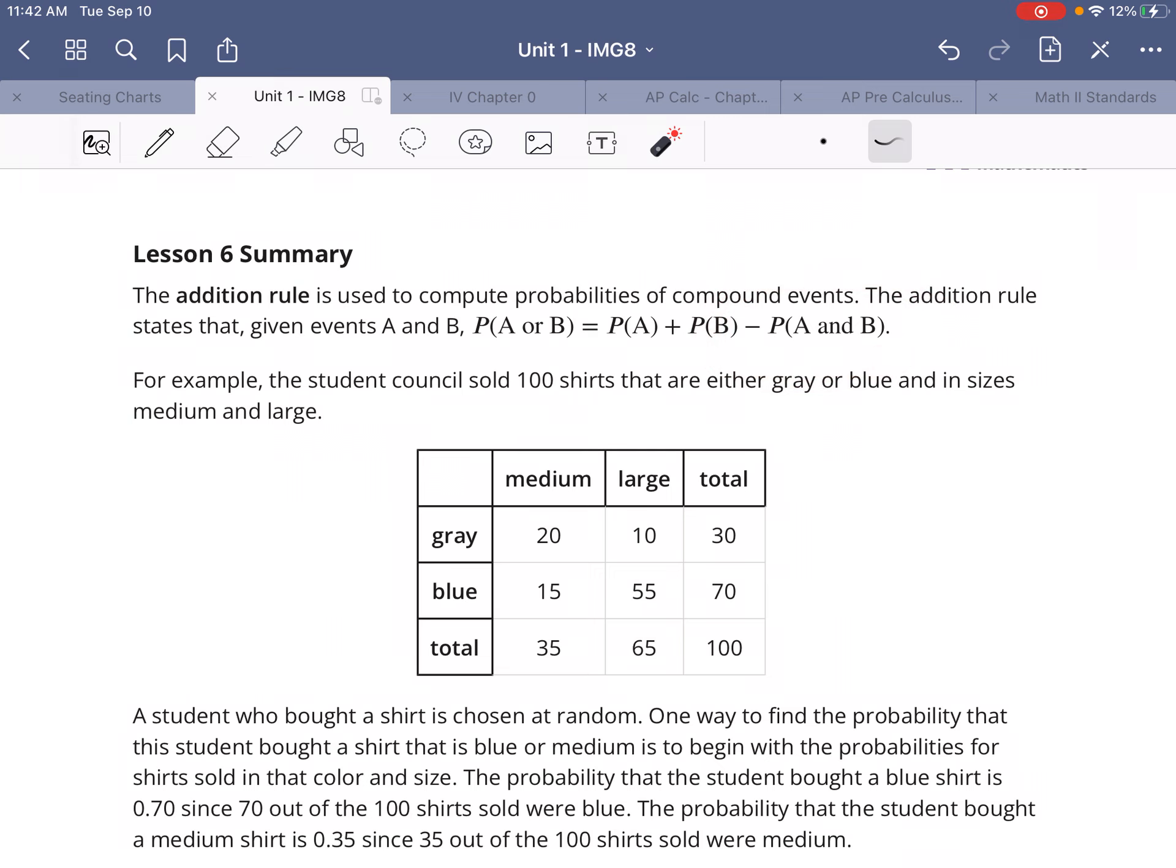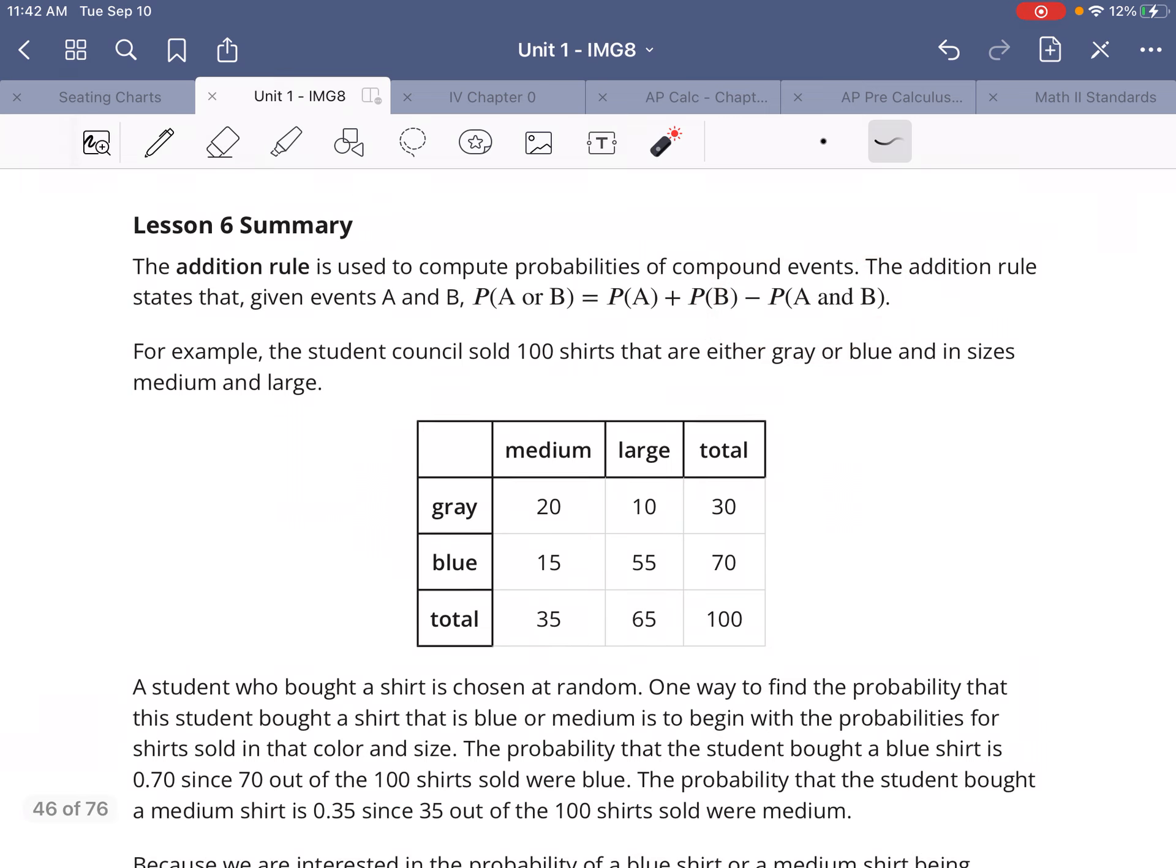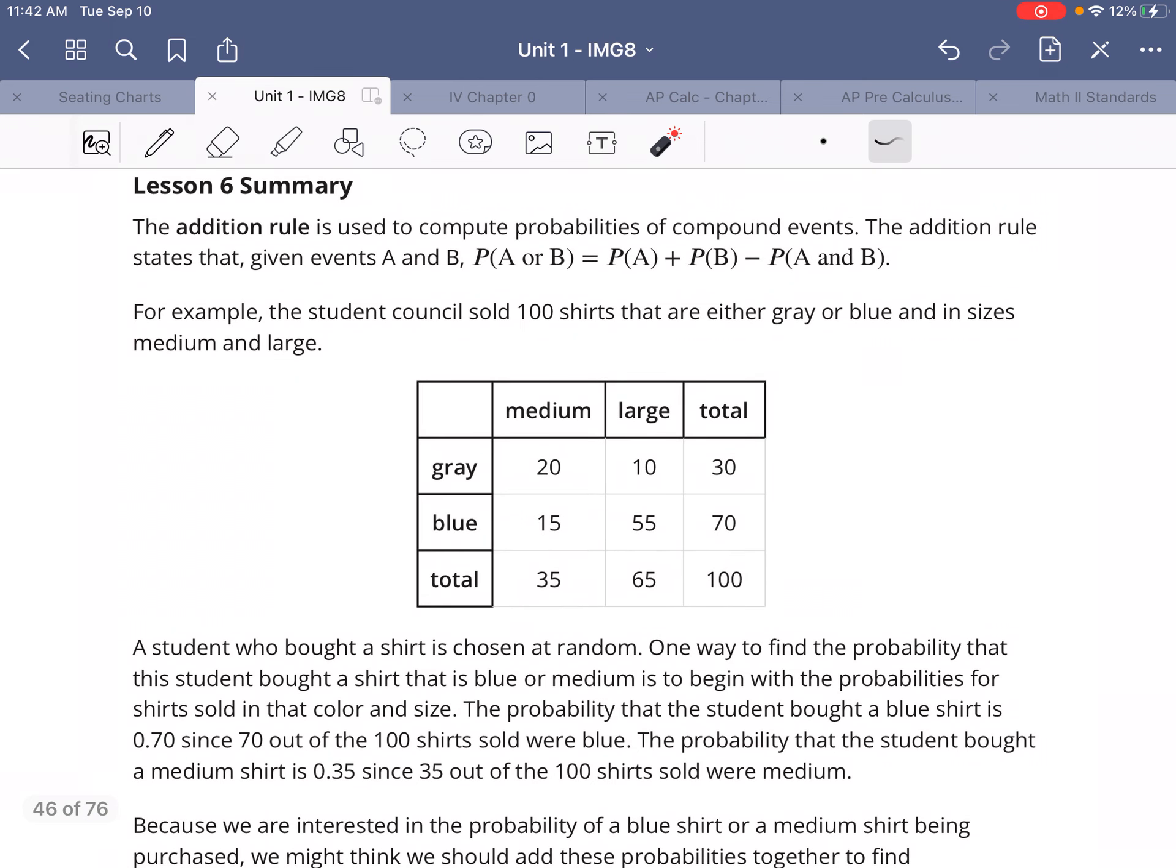For example, student council sold 100 shirts that are either gray or blue and in sizes medium and large. A student who bought a shirt is chosen at random.